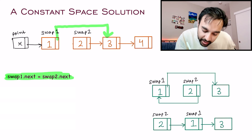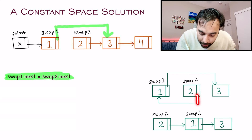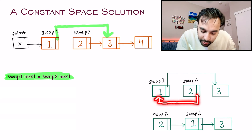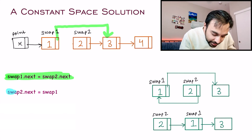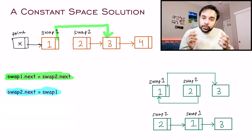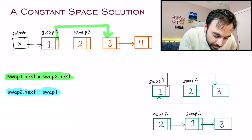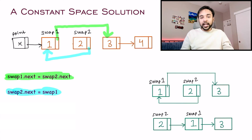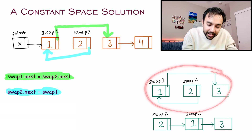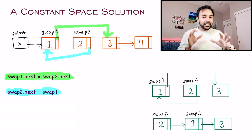Now look at swap two. In the desired result, swap two's next should point to swap one. So you assign swap2.next = swap1. This breaks the original pointer from swap two and creates a new one pointing to swap one. You can see how we are achieving the desired arrangement step by step, but things are not fully done yet.